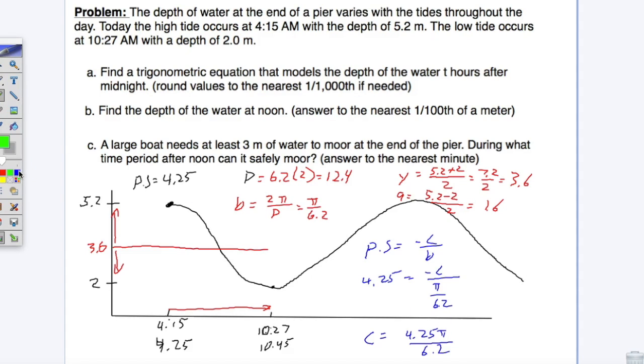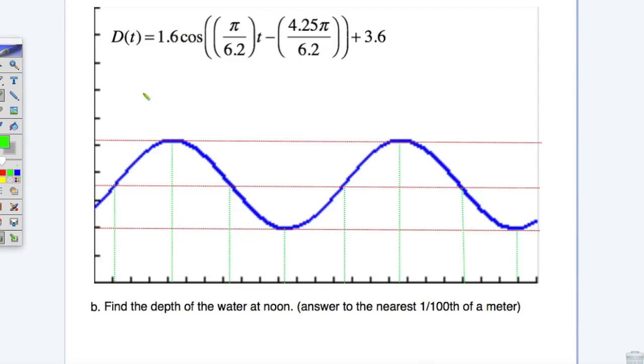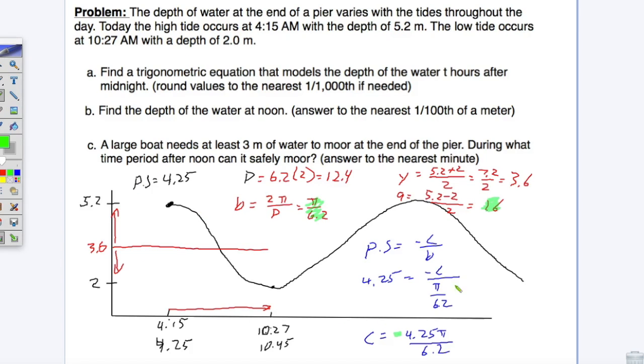Let's go to the highlighter and highlight in green. We have y, or depth at any given time, is going to be 1.6, which is the amplitude, times cosine π over 6.2 times t minus this whole thing—and I didn't carry that minus sign down—so it's minus 4.25π over 6.2, close parentheses, and then your vertical shift is 3.6. So D(t) equals 1.6 cosine of π over 6.2 times t minus 4.25π over 6.2, all plus 3.6. All of these numbers came from these rough calculations here.